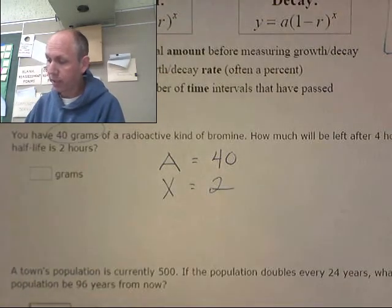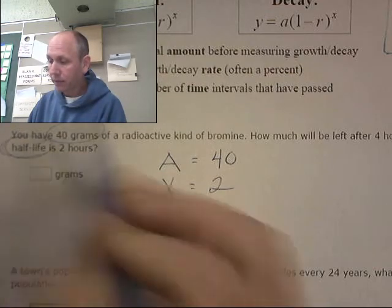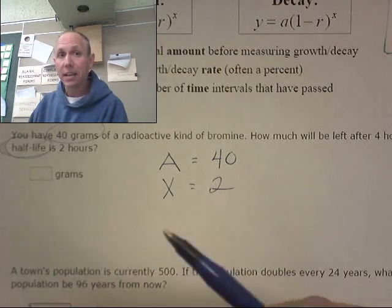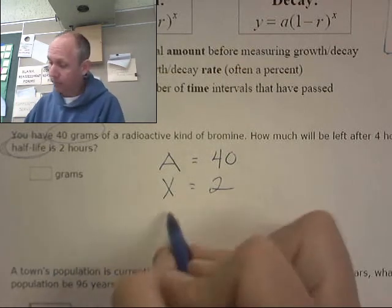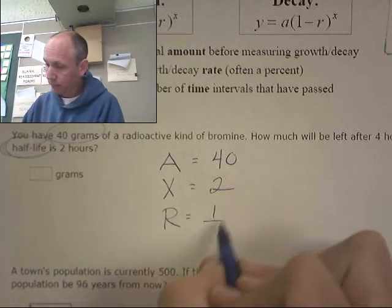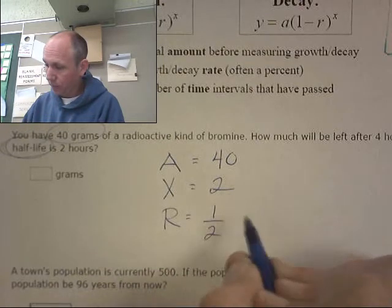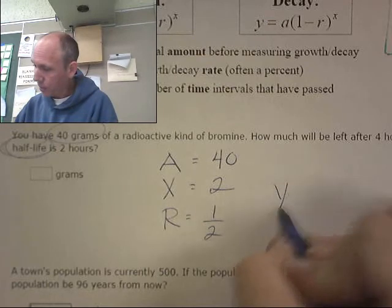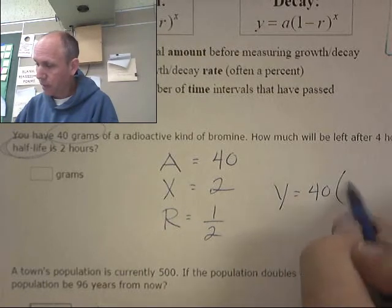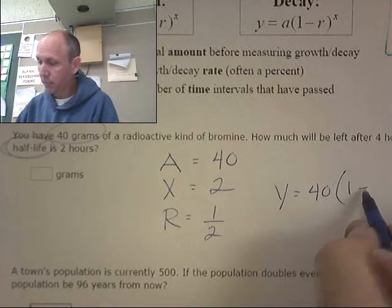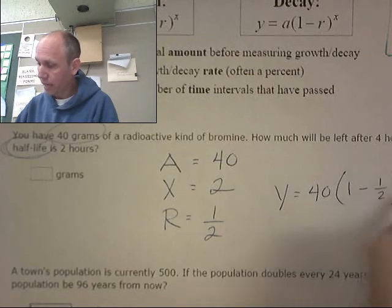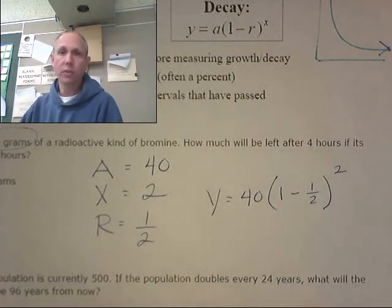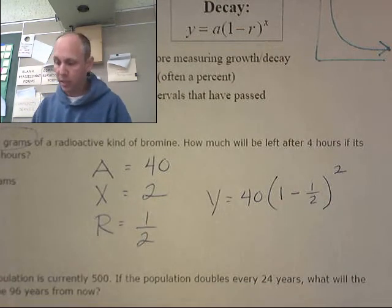Basically, I'm halving this twice. And the idea of a half, well, that's the rate of decay. And a half is a half. So my r value is one half. So this is what it looks like in the equation. y equals 40. That's my initial amount. 1 minus my rate of decay, which is one half. And I'm decaying it over two intervals. This is happening twice. I'm going to put this in a calculator.